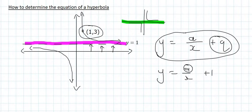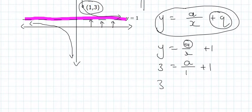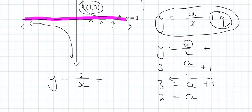We plug in that point, so the y value there is 3, the x value there is 1. So a over 1 is just a plus 1, and then you take the 1 over to the left hand side where it becomes 3 minus 1, which is 2. And there we are done already. The a value is 2 and the q value is 1, and that is the equation.